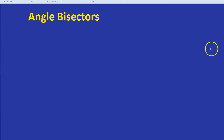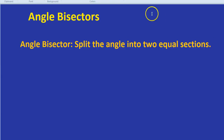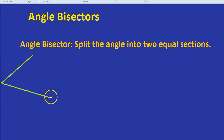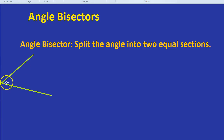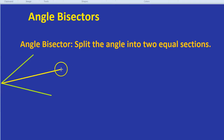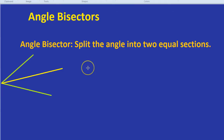On a diagram, that would look something like this. If we had an angle like so, you would expect an angle bisector to split that angle exactly in half. Something like this. Okay, that's what an angle bisector is.